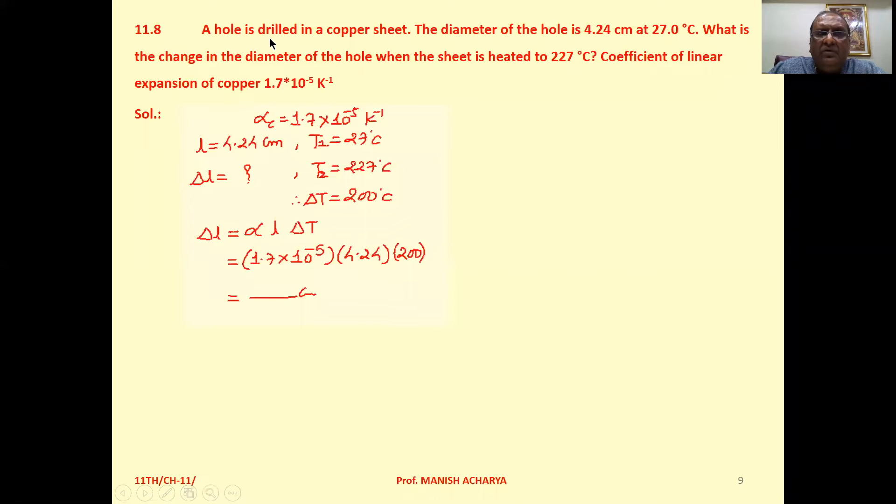Problem 11.8: A hole is drilled in a copper sheet. The diameter of the hole is 4.24 cm at 27 degrees Celsius. What is the change in the diameter of the hole when the sheet is heated to 227 degrees Celsius? Coefficient of linear expansion of copper is 1.7 into 10 raised to minus 5 Kelvin inverse.